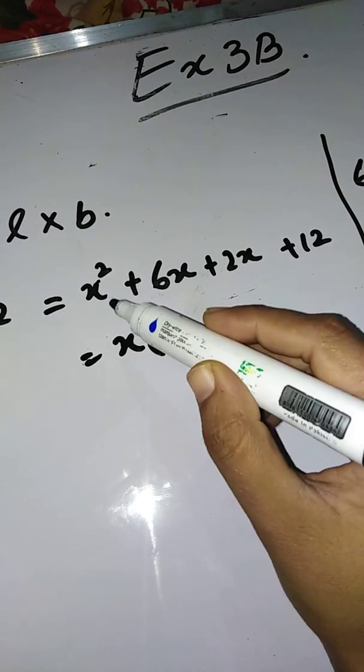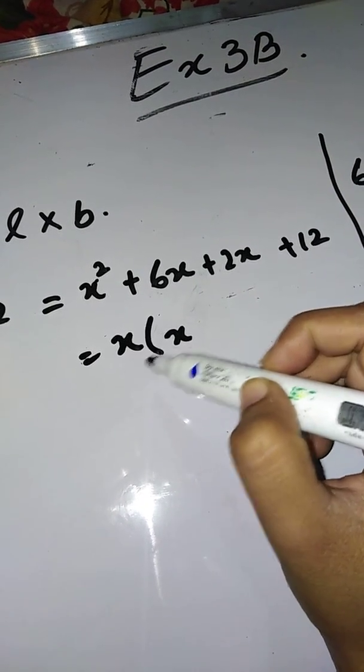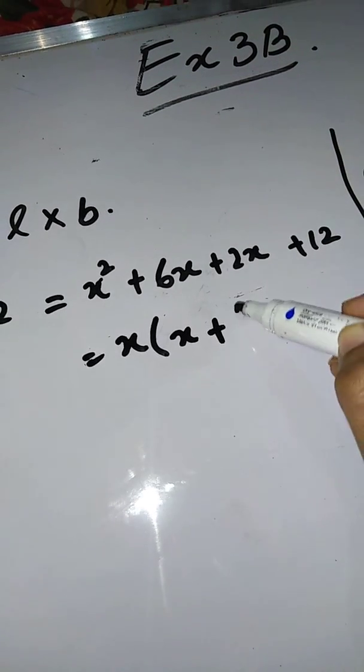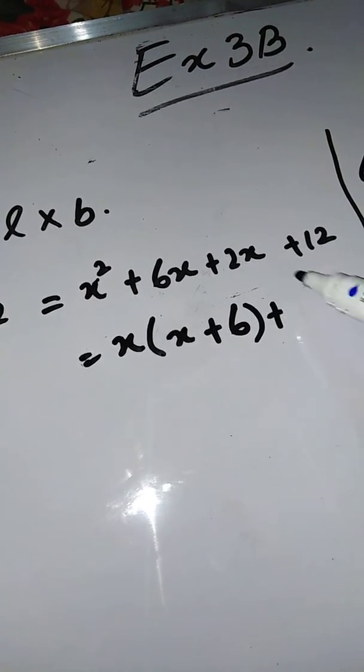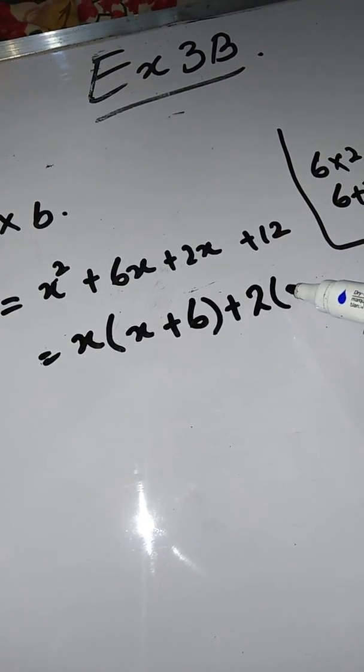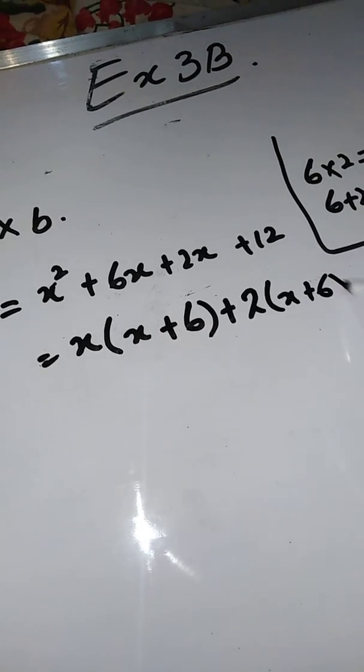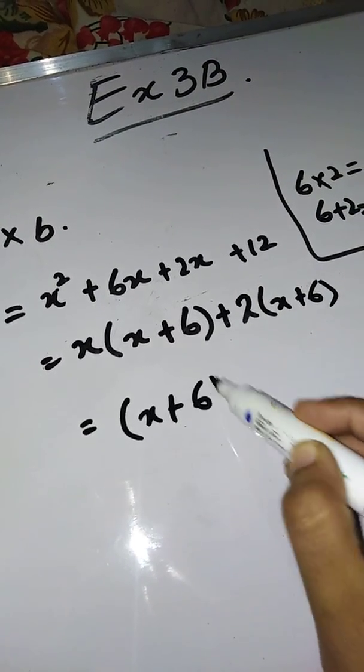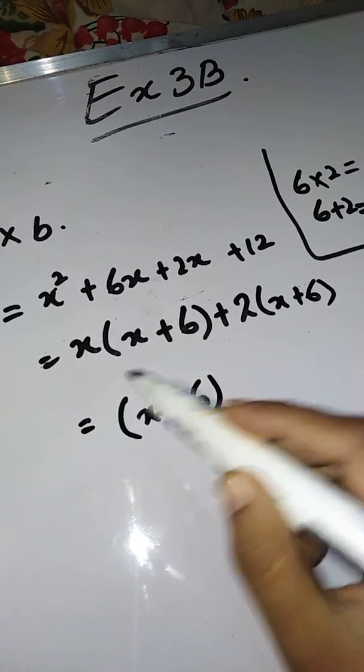Now 2x + 12. Take 2 common. 2x divided by 2 is x, and 12 divided by 2 is 6. So 2(x + 6). You can see that x + 6 is common in both terms. What's left is x and 2.